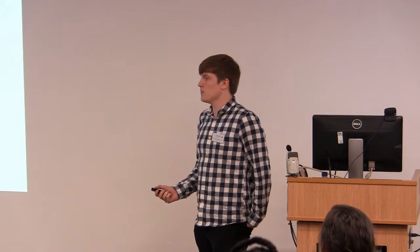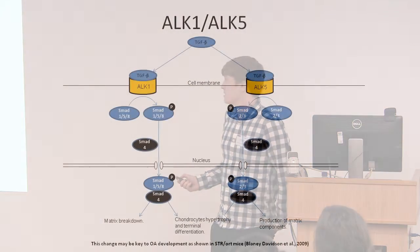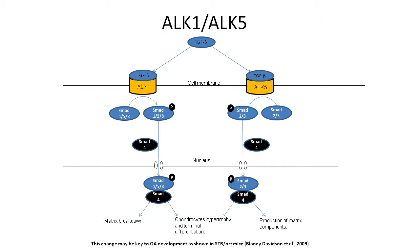TGF-beta can signal through two type 1 receptors: ALK5 or ALK1. In a young organism, there is a very high level of the ALK5 receptor with a lower level of ALK1, so TGF-beta preferentially binds ALK5, and through its downstream signaling leads to production of matrix components as well as blocking chondrocyte hypertrophy and terminal differentiation. As we age, for reasons not yet fully understood, the levels of ALK5 decrease, whereas ALK1 levels remain relatively constant or even increase, leading TGF-beta to preferentially bind ALK1, which causes matrix breakdown and increased chondrocyte hypertrophy.